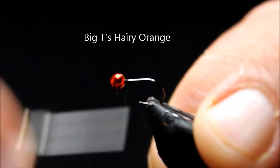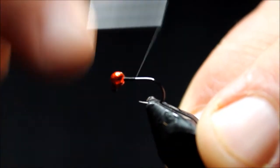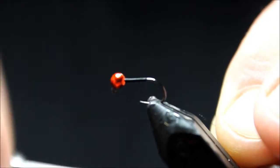We'll start by wrapping some Danville black 70 denier thread on a Big T claw style jig hook in a size 16.